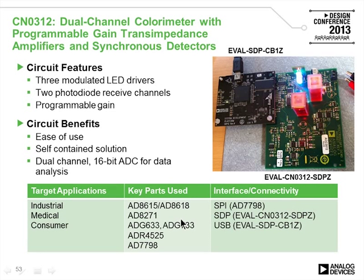This shows the board for the dual channel colorimeter. We have red, green, and blue LED drivers. The light gets split between the reference container and the unknown container, and we have photodiode receivers on the other side. We process the two channels. The circuit contains synchronous detection, LED drivers, photodiode receivers, and programmable gain capability in the input stage.